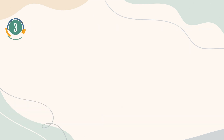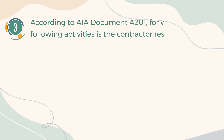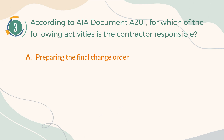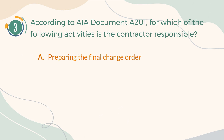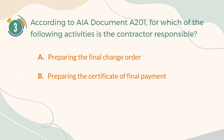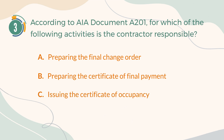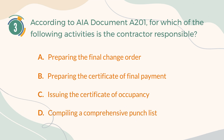Number 3. According to AIA document A201, which of the following activities is the contractor responsible for? A. Preparing the final change order. B. Preparing the certificate of final payment. C. Issuing the certificate of occupancy. D. Compiling a comprehensive punch list.